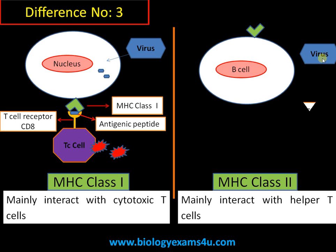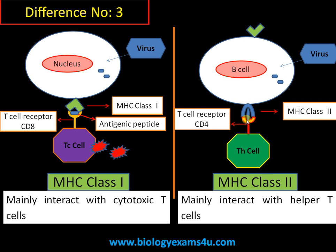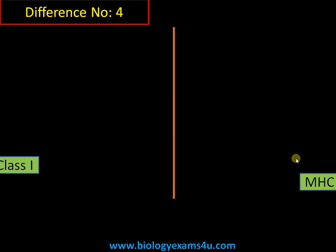In the case of MHC class 2, antigen presenting cells such as B cells take up viral particles, which are degraded inside the cell and presented on MHC class 2. T helper cells can then recognize the antigenic peptide bound to MHC class 2 via their CD4 receptor. When antigenic peptides are bound on MHC class 2, they activate T helper cells.